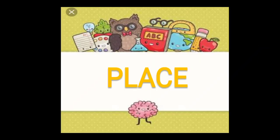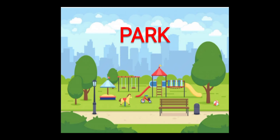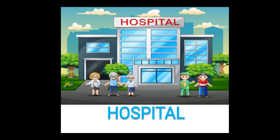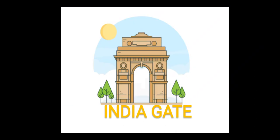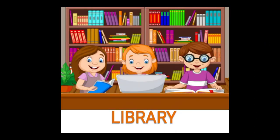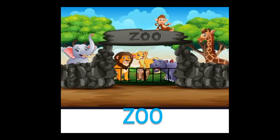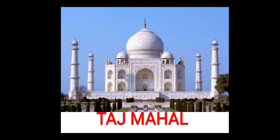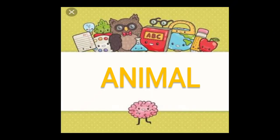Now we will discuss about some places. Ab ham kuch places ko discuss karte hai. Like park — park is a place. School — school is a place too. Hospital, India Gate, library, zoo, water park, Taj Mahal.